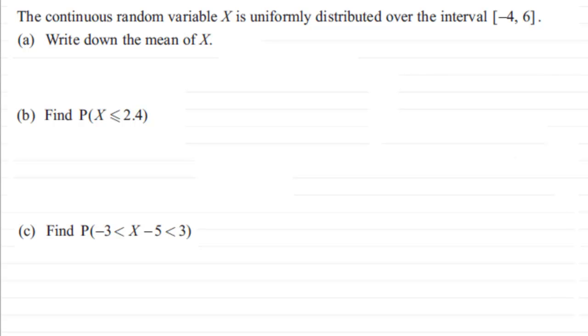Okay, welcome back if you had a go. What we've got here is the continuous random variable X is uniformly distributed over the interval minus 4 to 6, and what we got to do in part a is write down the mean of X.